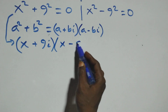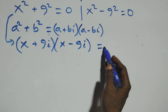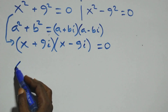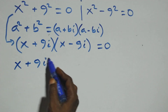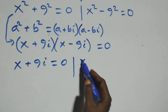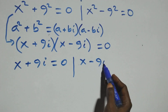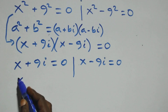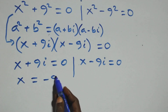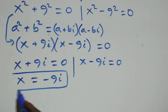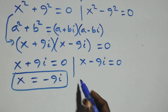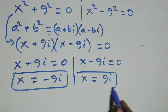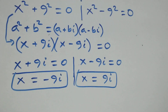This gives two possible cases: x + 9i = 0 or x − 9i = 0. Solving: from x + 9i = 0 we get x = −9i, which is a complex solution. From x − 9i = 0 we get x = 9i, which is also a complex solution. So we have two complex solutions from here.